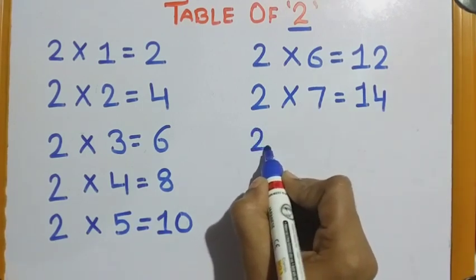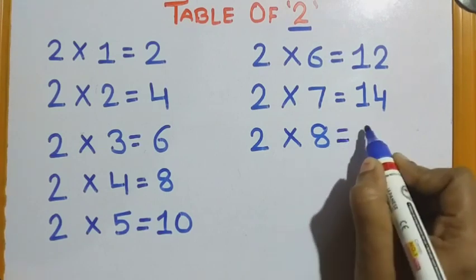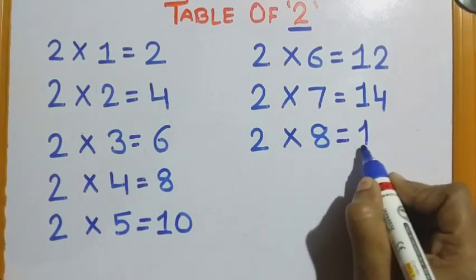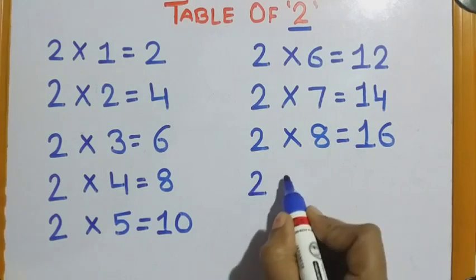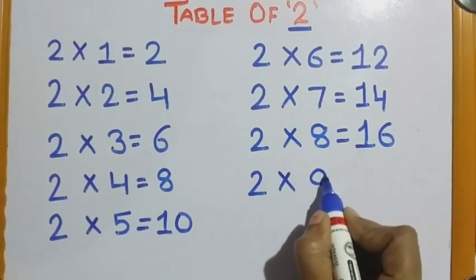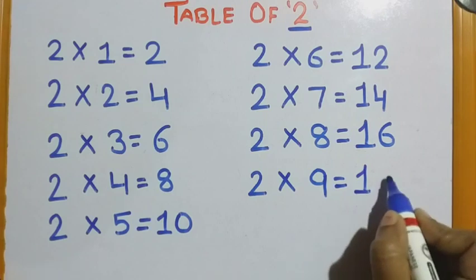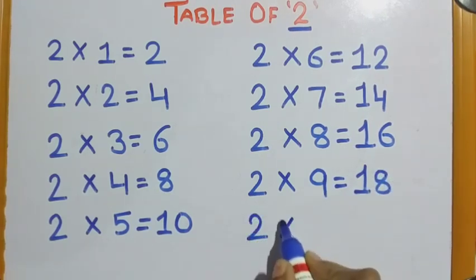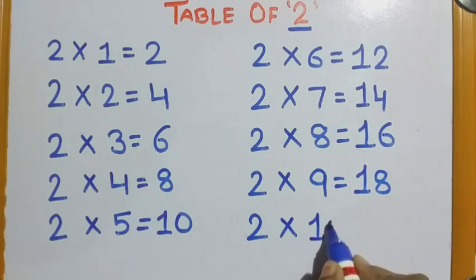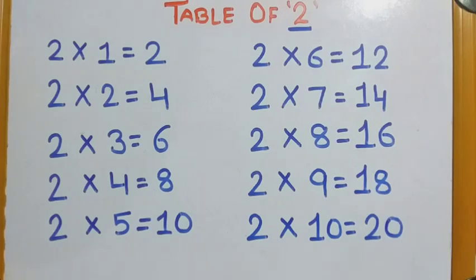Two eights are sixteen. Two nines are eighteen. Two tens are twenty. Learn once again.